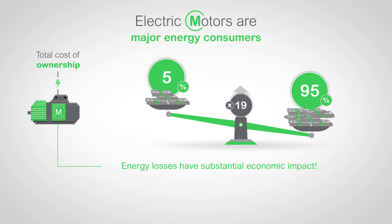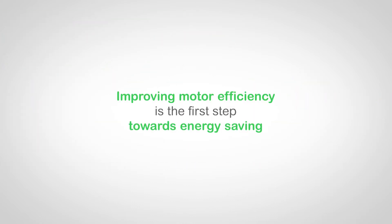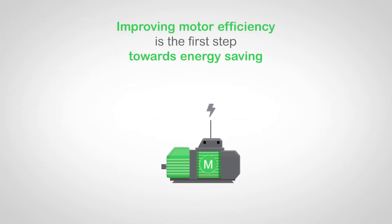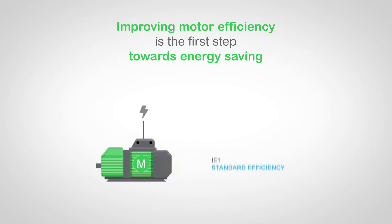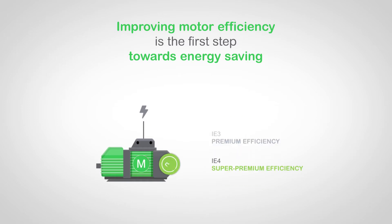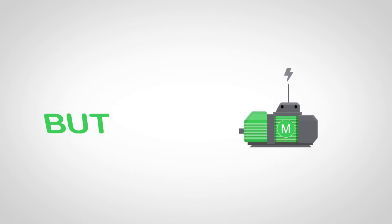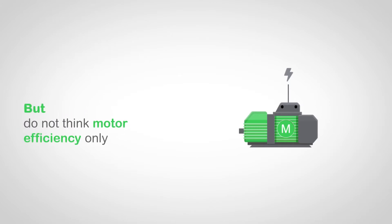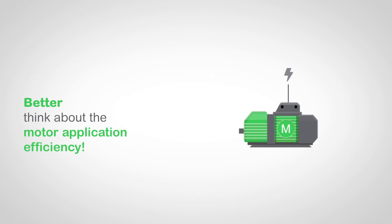With such a prominence of energy consumption, energy losses have a substantial economic impact. Improving motor efficiency is the first step towards energy saving, especially for low-power motors — the vast majority in number and consumption. Consecutively, motor-related standards have continuously pushed for higher efficiency. But don't think about efficiency of the motor only, because in some cases a higher motor efficiency class may not be the single answer to energy saving.